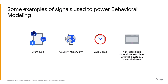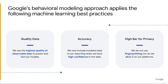Google uses a variety of signals to power behavioral modeling in GA4. To create an accurate, aggregate, and modeled view of customer behavior, machine learning can analyze different observable signals such as event type, country, region, city, date, time, or other non-identifiable dimensions associated with the device. Google's behavioral modeling approach applies the following machine learning practices to protect user privacy: we use the highest quality of observable data to power and test our models, collected from users who have consented to it being collected. Second, we only include model data in our reporting when we have high confidence in the data. And third, we do not use fingerprinting, nor do we allow it on our platforms — fingerprinting is a technique that uses the unique characteristics of a device to identify it.